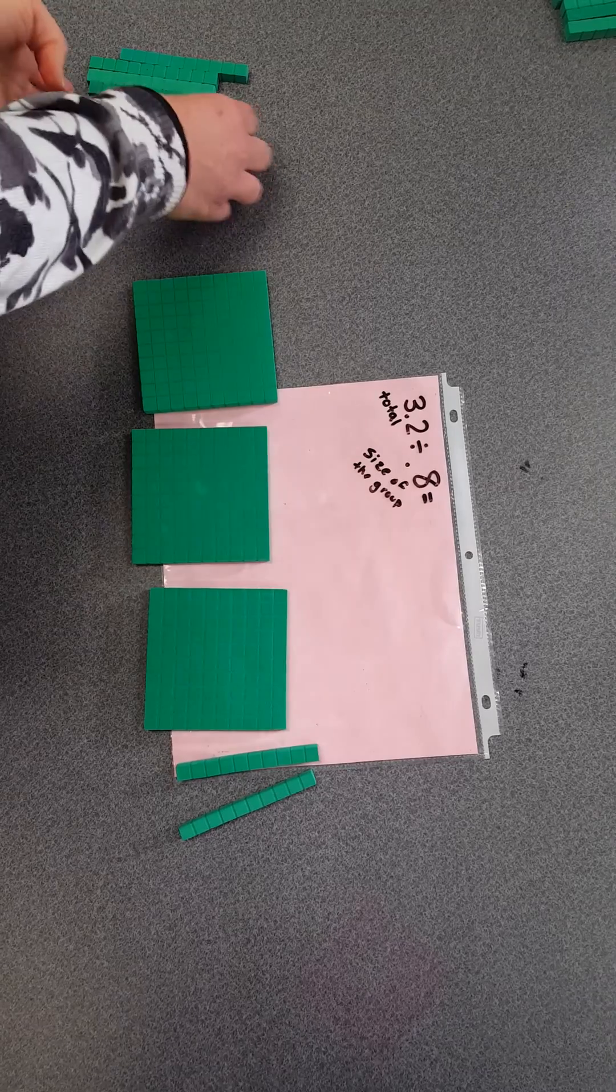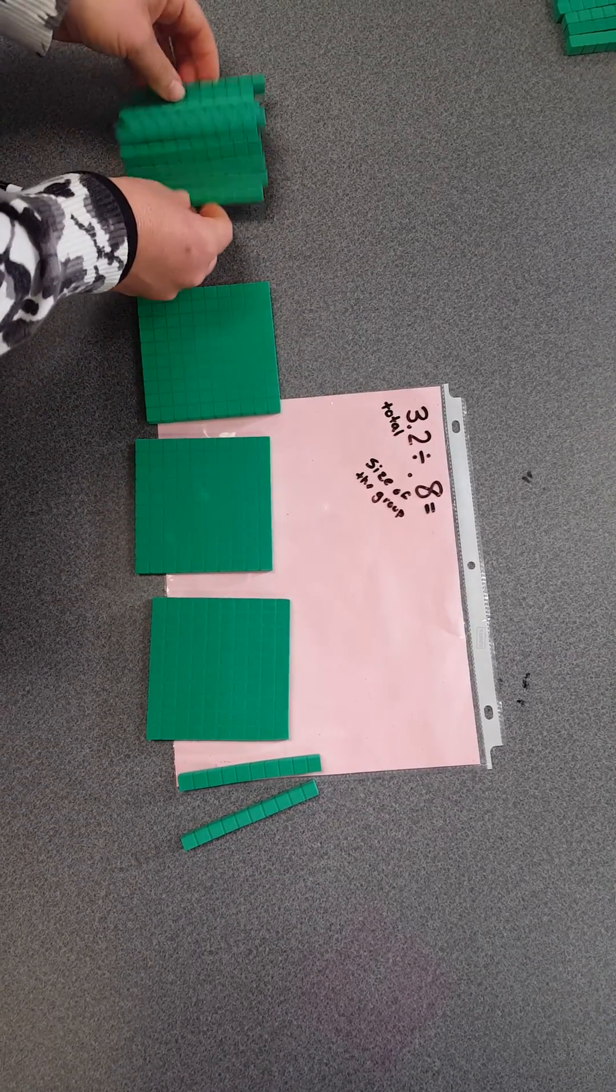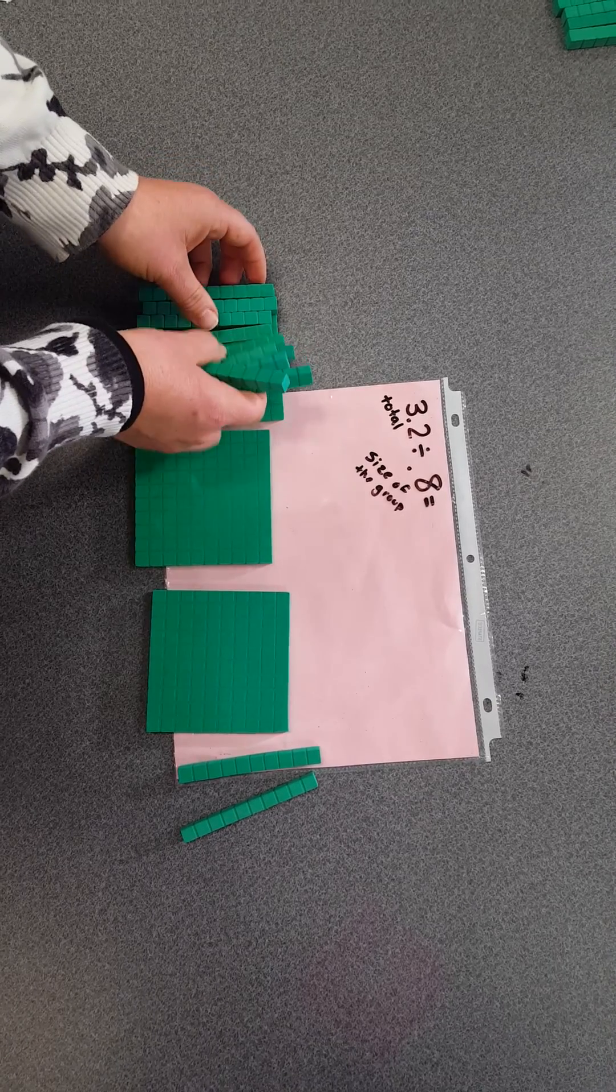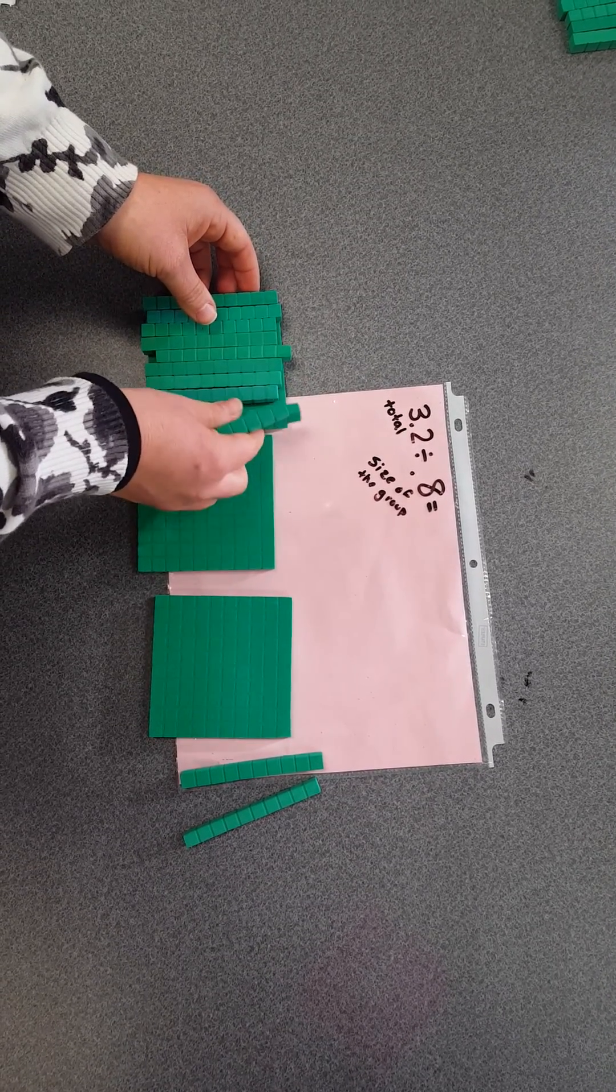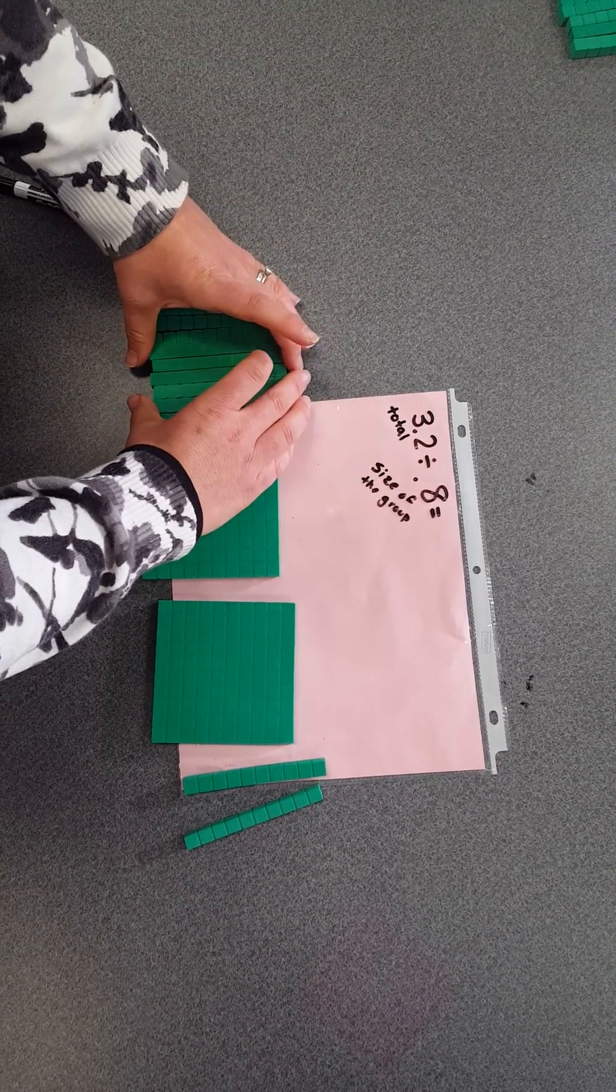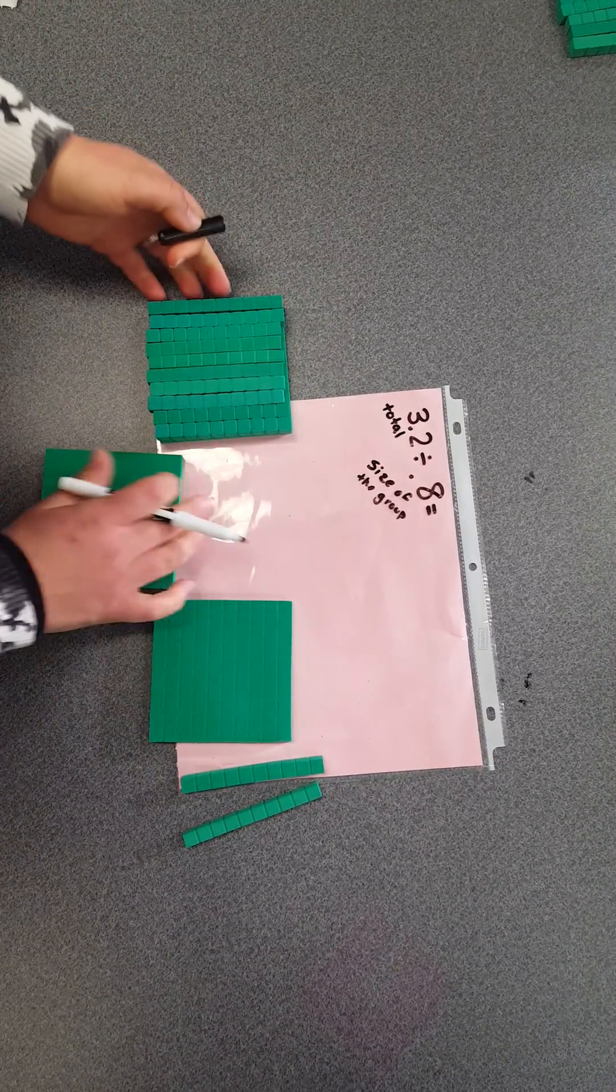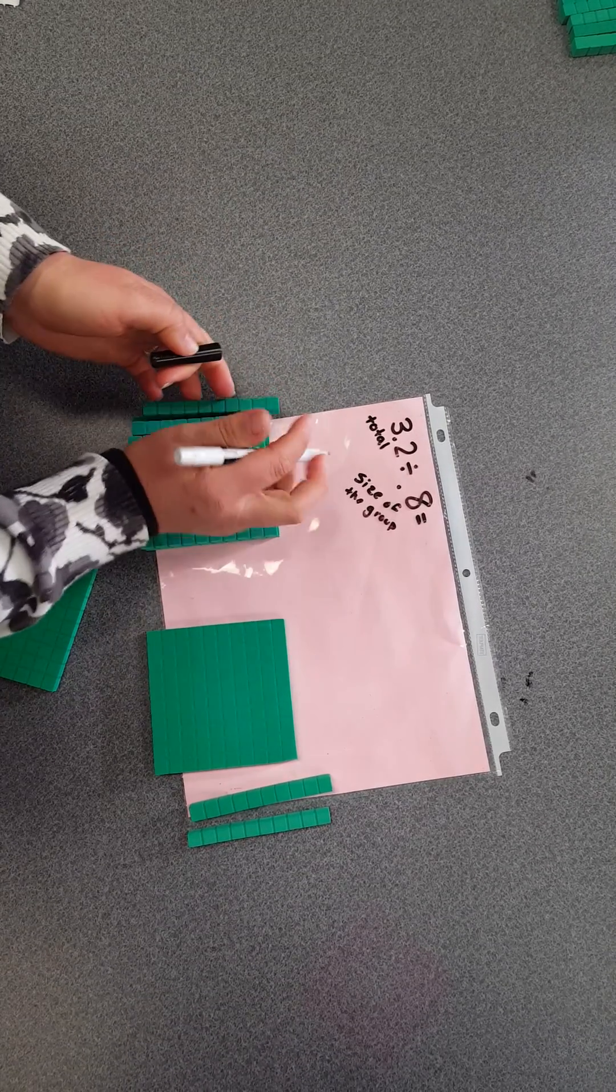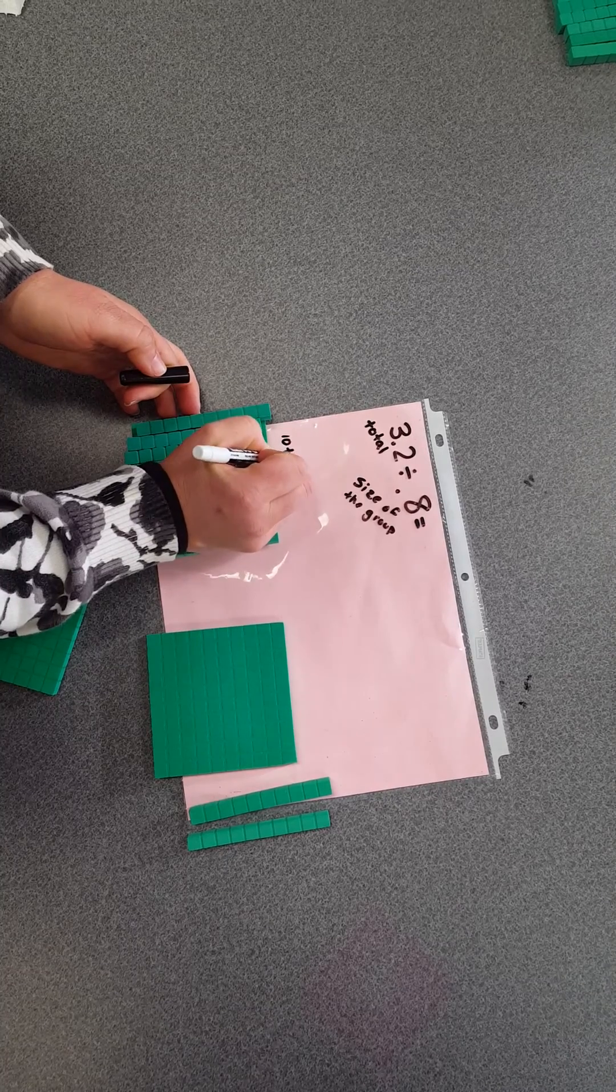So I'm going to replace each whole with tenths. I know that if I put 10 tenths on top of one whole, they'll be equivalent. So this whole is equal to 10 tenths.